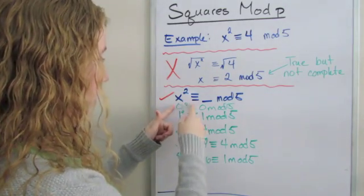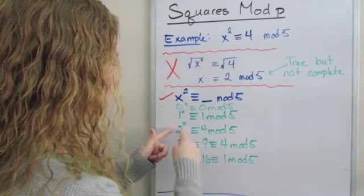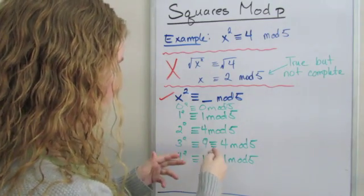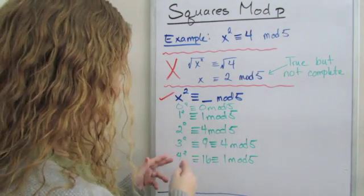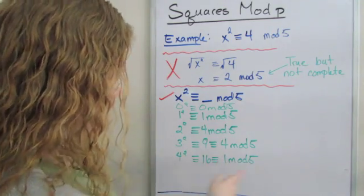So we say that 0² ≡ 0 mod 5, 1² ≡ 1 mod 5, 2² ≡ 4 mod 5, 3² ≡ 9, which is congruent to 4 mod 5, and 4² ≡ 16, which is congruent to 1 mod 5.